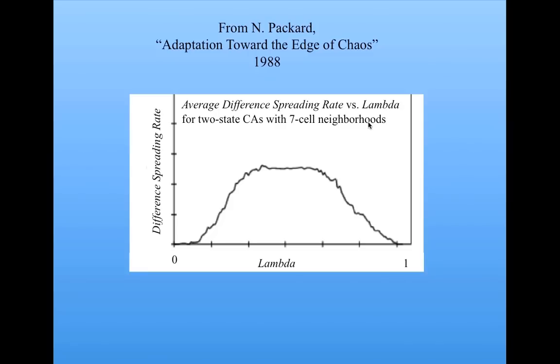Norman Packard investigated that. What he did was he looked at different cellular automata here with seven cell neighborhoods. That is, each cell looks at three neighbors on either side. For each lambda value, he tested a number of randomly selected cellular automata with that lambda value, with the number of random initial conditions. He computed the average difference spreading rate, which is a measure of sensitivity to initial conditions. Basically, you take the same cellular automaton, start it with two very close initial conditions, maybe one bit away from each other, one black cell turned to a white cell, and see how fast the two spread apart in behavior. There's a measure for that.